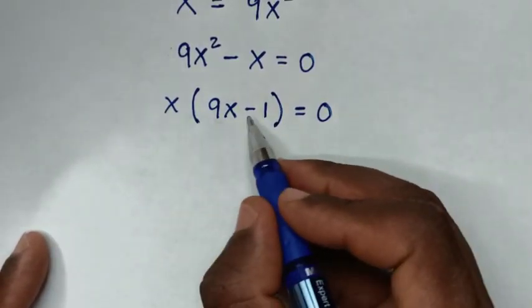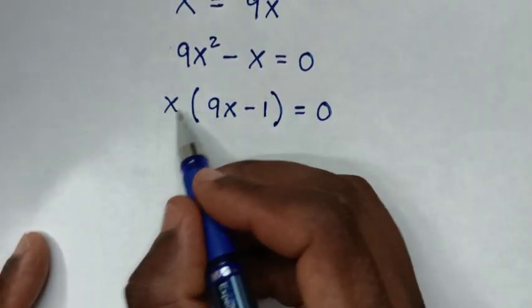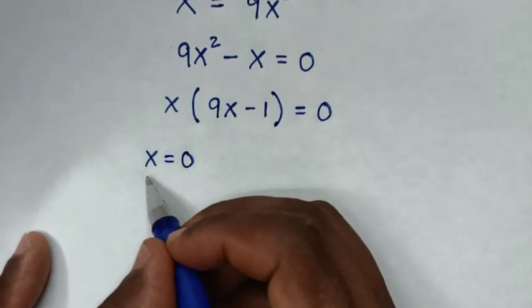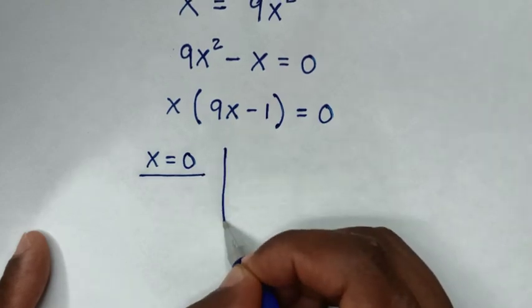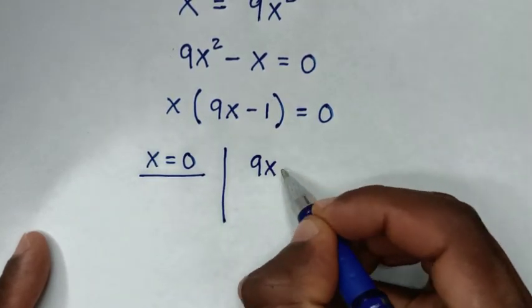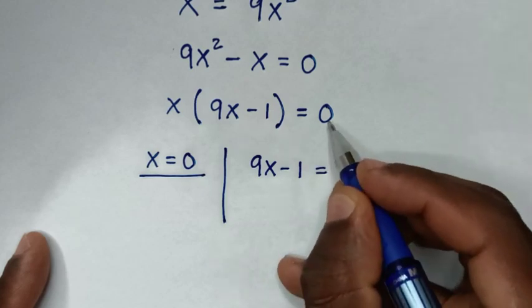Then in here, we have 2 solutions, whereas x is equal to 0, the first solution x is equal to 0, this is the first solution of x, and the other solution is this 9 x minus 1 is equal to 0.